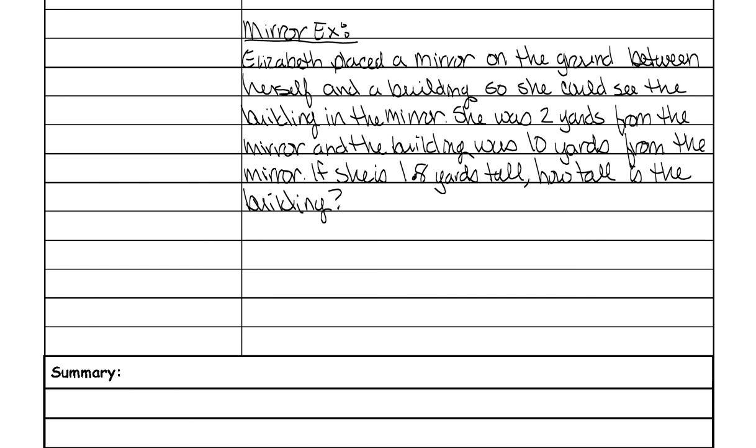So the first thing you want to do is draw an example. Okay, so this is Elizabeth right here. She is two yards from this is a mirror. This big black blob. And then the building is 10 yards from that mirror. And she can see the top of the building through the mirror. She is 1.8 yards tall. So all you have to do is set up your proportions and solve at this point. So the third thing that we have to do.